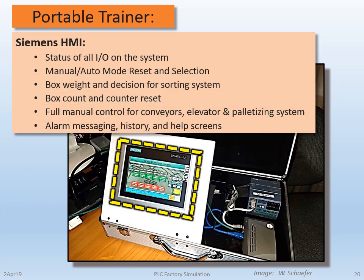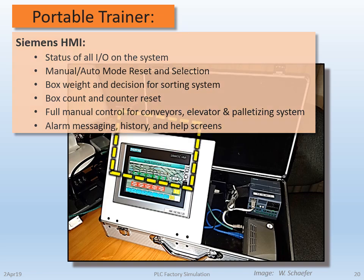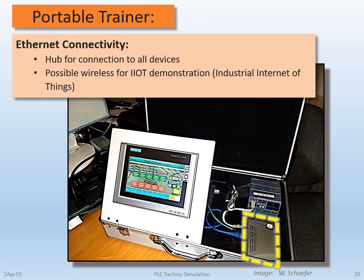As you can see, I've added a Siemens Comfort SOP TP700 HMI. This allows me to show the status of all the I/O in the system, with manual and automatic mode reset and selection screens, box weight and decisions for the sorting system, and box count and counter reset. As far as Ethernet connectivity is concerned, I've added a hub for the connection point for all the devices, and you can make this wireless for some basic IIoT demonstrations.